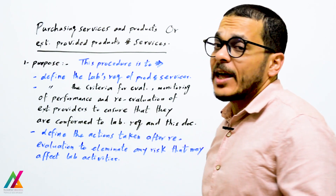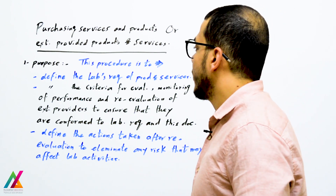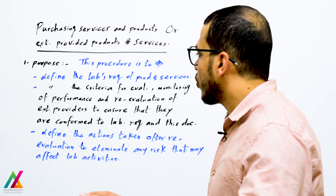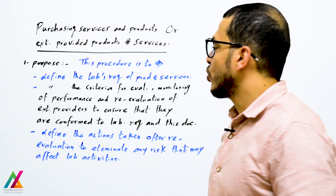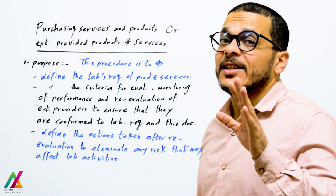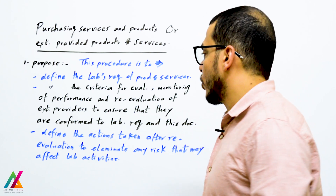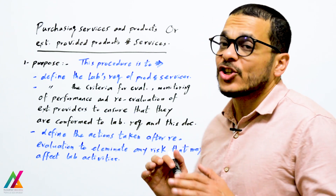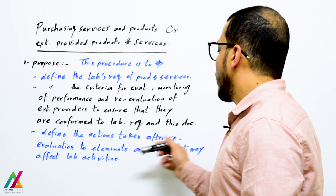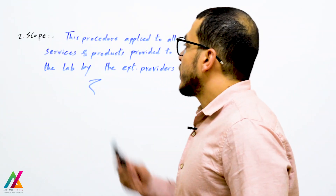The purpose of this procedure is to define the lab's requirements for products and services, define the criteria for evaluation, monitoring of performance, and re-evaluation of external providers to ensure they are competent and conform to lab requirements and the requirements of this document, and to define the actions taken after re-evaluation to eliminate any risk that may affect lab activities.